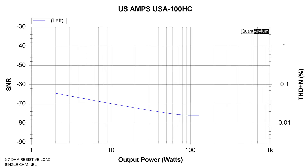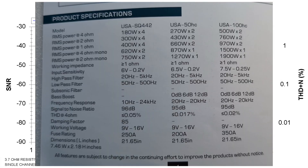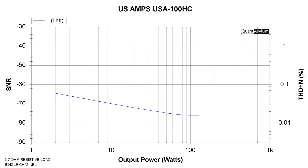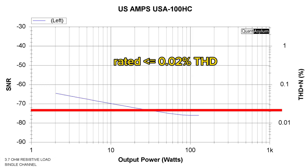The amplifier at a 1 kHz 4-ohm load is rated for 0.02% or less THD. Looking at these test results at a 3.7-ohm resistive load at 1 kHz, we can see that above 30 watts we get below that 0.02% THD level. To be fair, this is a THD plus noise measurement, so it's automatically going to be higher than just a traditional THD measurement.